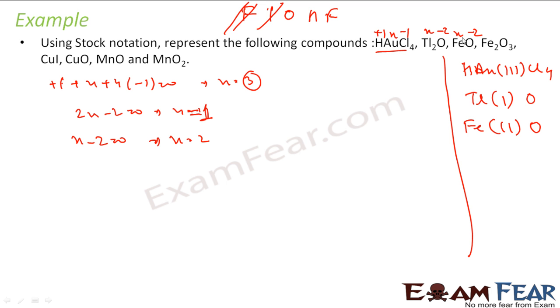Similarly Fe2O3, let's apply the rules. This becomes oxygen minus two and let this be Y. So Fe is two into Y plus three into minus two. You solve this, you get X as or Y as three. So this is Fe2(III)O3.